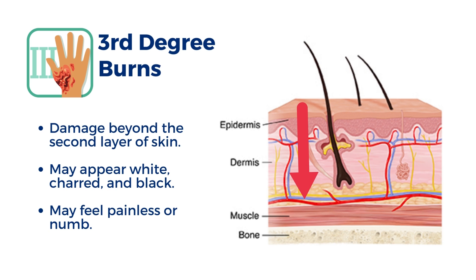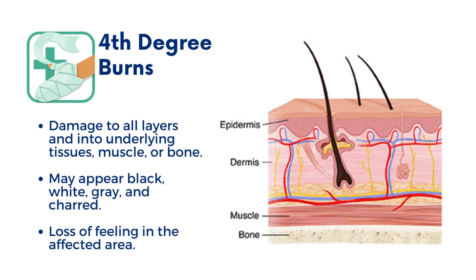Third degree burns: the burn goes through the skin's first two layers and deeper tissues. This type of burn may feel painless or numb. Fourth degree burns: the burn goes deeper into all skin layers, underlying tissues, muscle, and bone. There is a loss of feeling in the affected area.